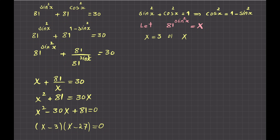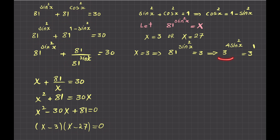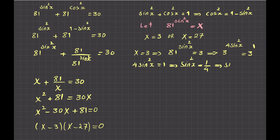For X equals 3: 81 to the power of sine x squared equals 3. Since 81 is 3 to the power 4, this becomes 3^(4 sin²x) equals 3^1, so the exponents must be equal: 4 sin²x equals 1, meaning sin²x equals 1/4, so sine x equals plus or minus one half.